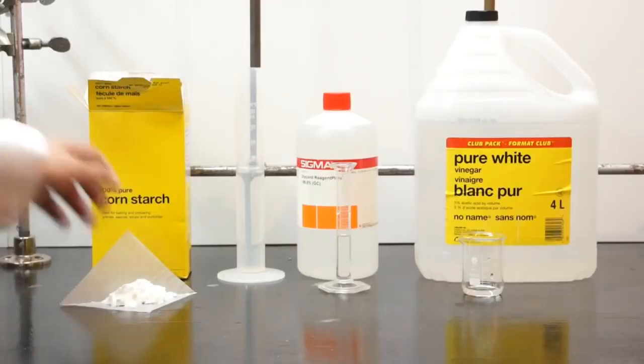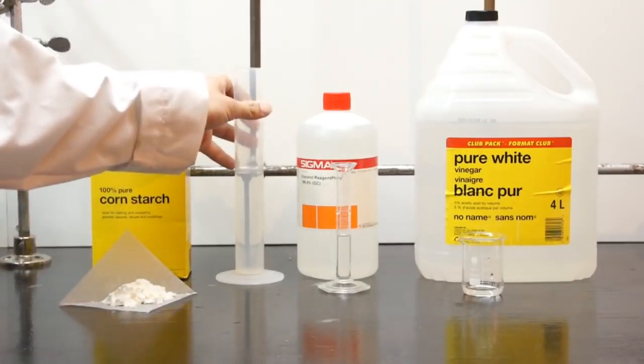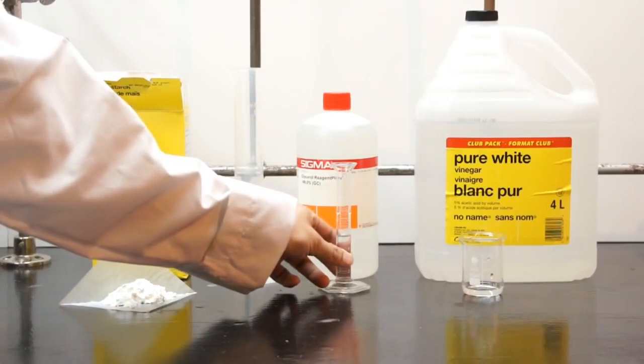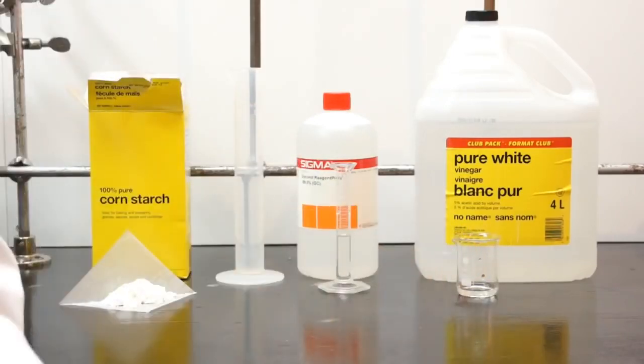For this experiment, you're going to need 9.5 grams of cornstarch, 60 milliliters of water, 5 milliliters of glycerin, and 5 milliliters of 5% acetic acid in water, or vinegar.